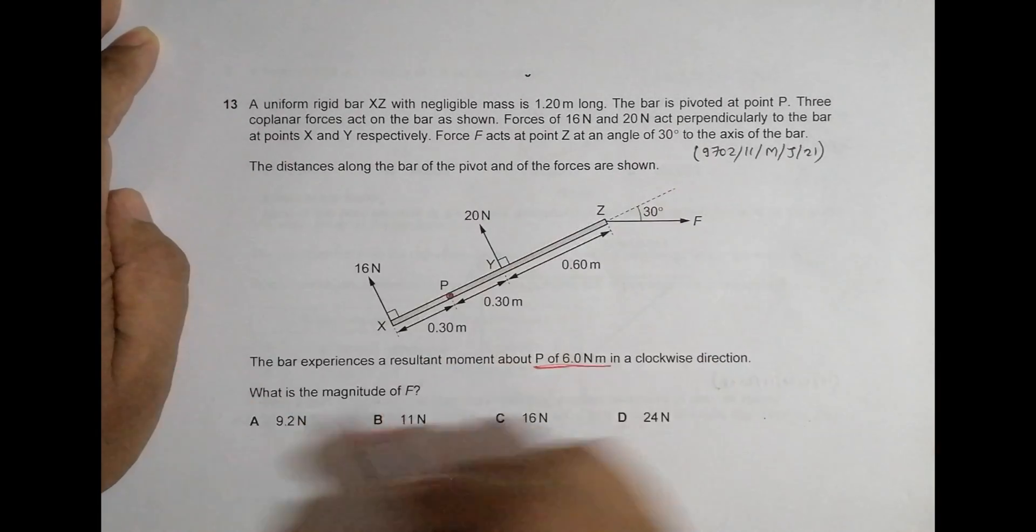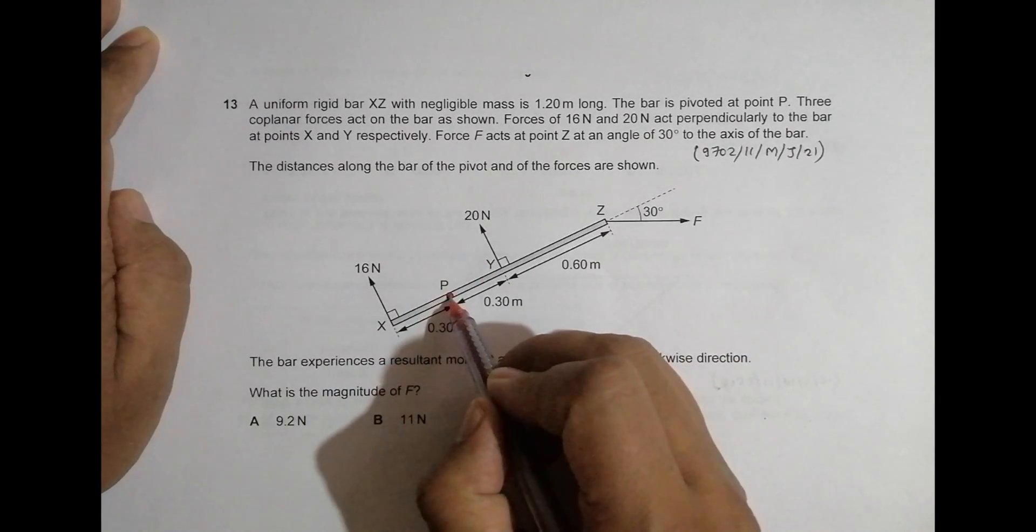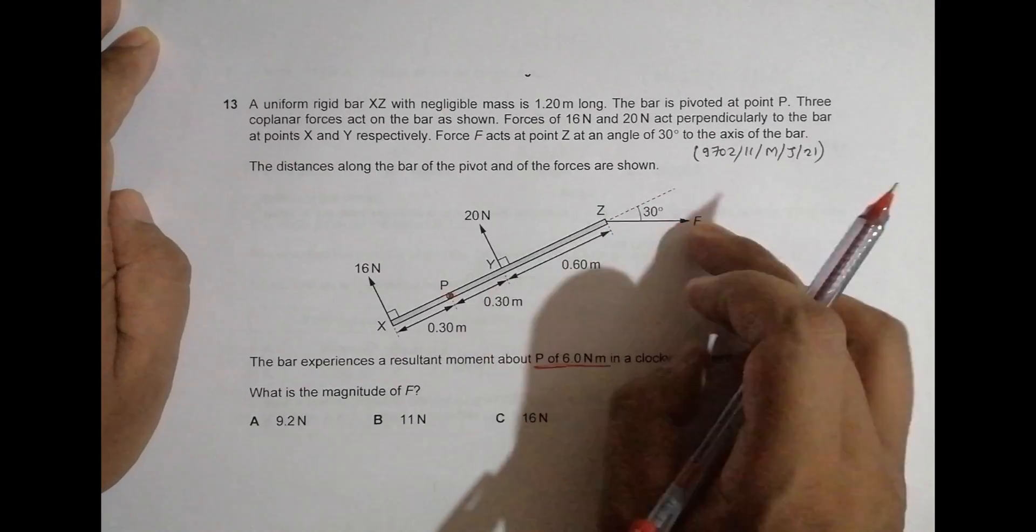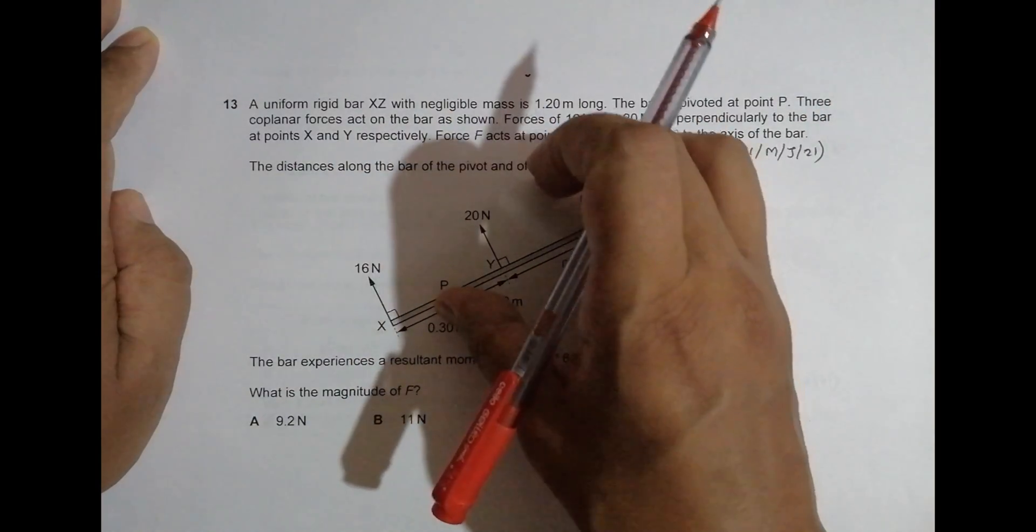The first thing is, since this is pivot and the force is here, it will try to move this thing in a clockwise sense. It tries to move it in a clockwise sense. This is fixed, we apply it like this, it will try to rotate like this. So that's why this is clockwise.